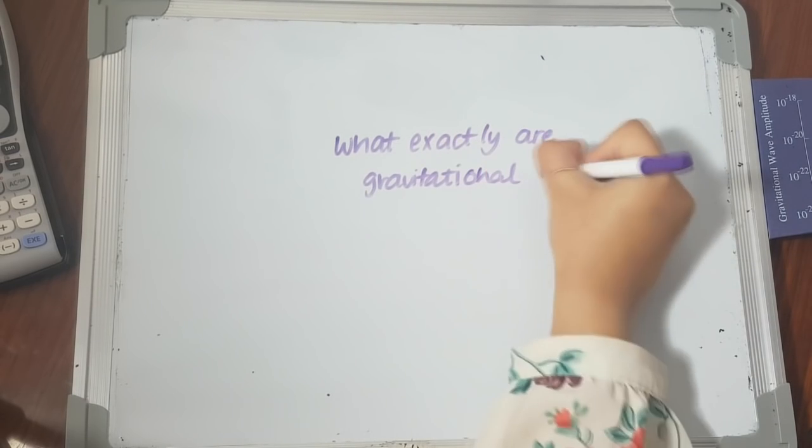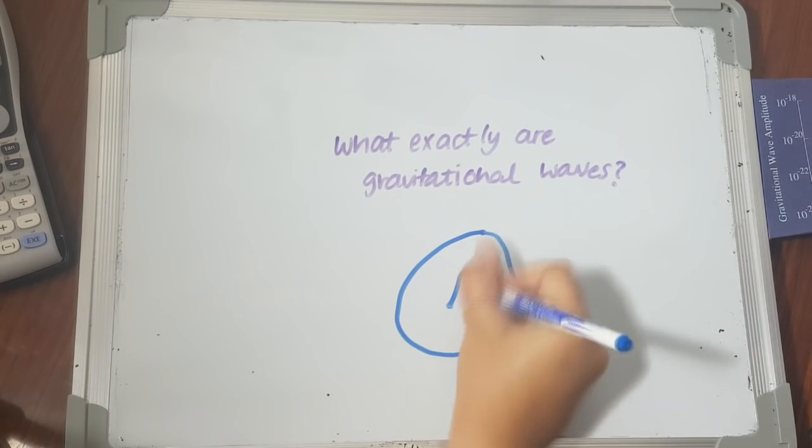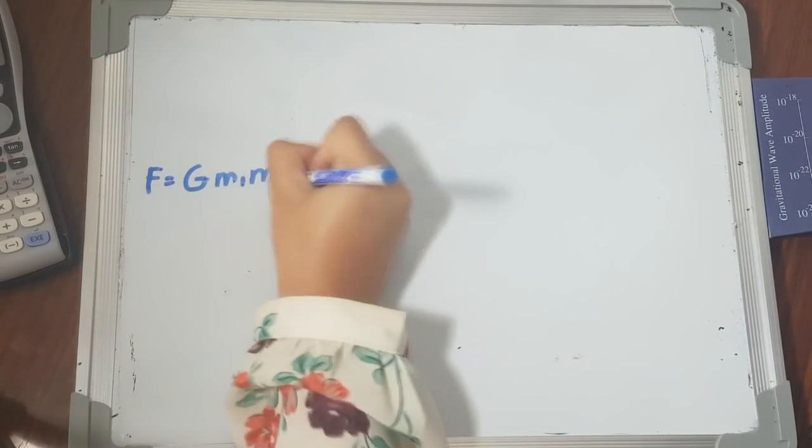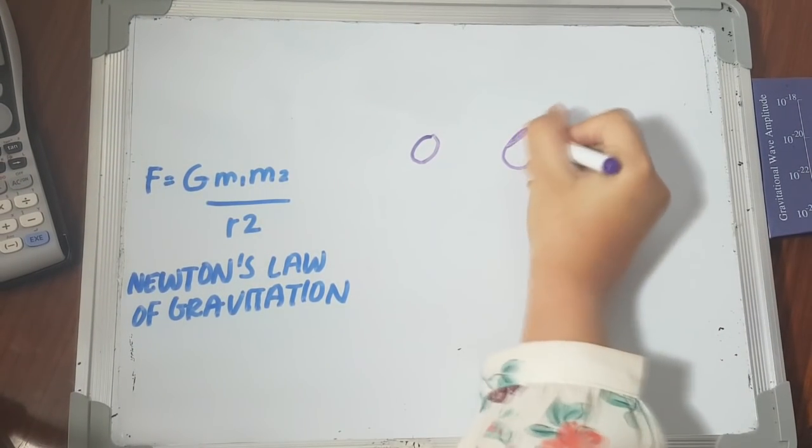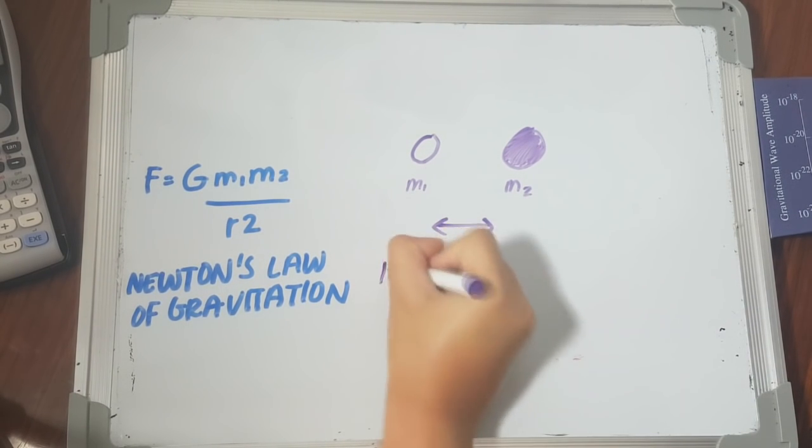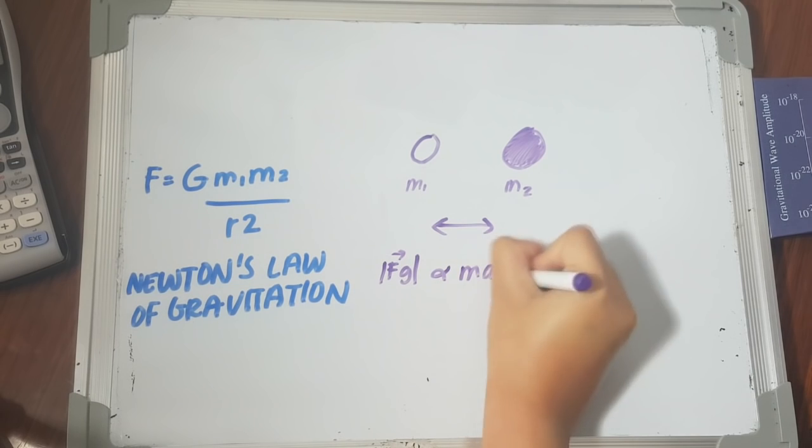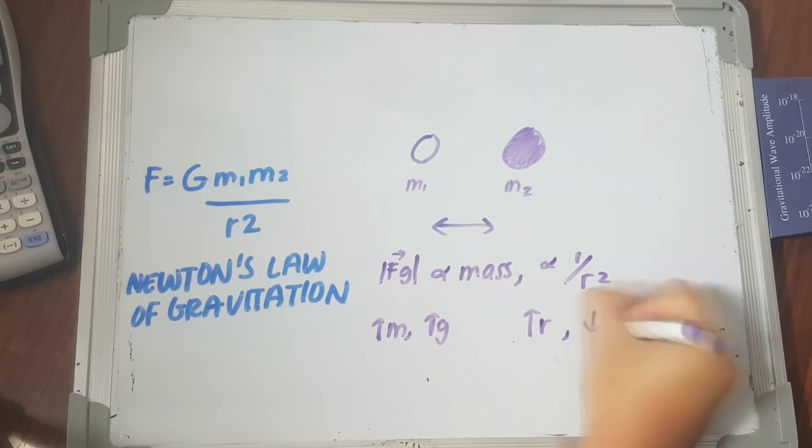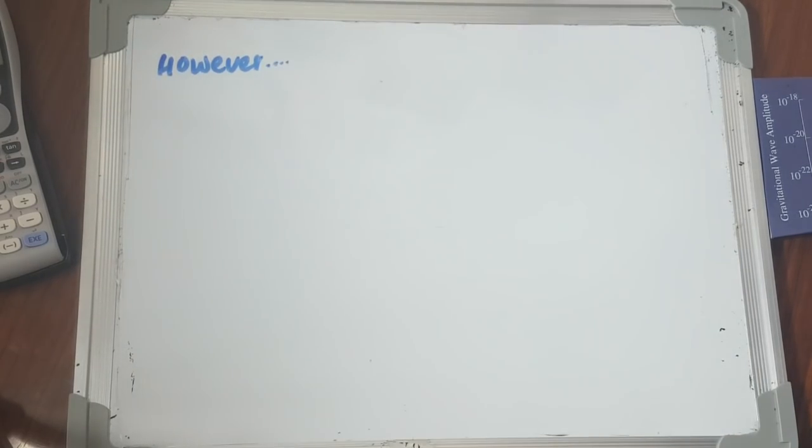Now, what exactly are gravitational waves? To explain, let's go back in time a little. This is Newton's law of gravitation. It essentially states that any two bodies with masses exert mutual pulls on each other. The gravitational pull depends on their masses and also the distance from each other.